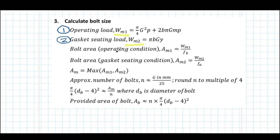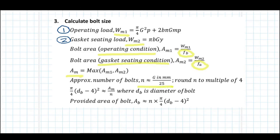The required bolt area for operating conditions is calculated based on wm1 and the flange allowable stress at operating conditions. The bolt area corresponding to the gasket seating condition is calculated based on wm2 and allowable stress at ambient temperature. The required area of the bolt is taken as the maximum of am1 and am2. The number of bolts is approximated using the empirical relation as shown here.